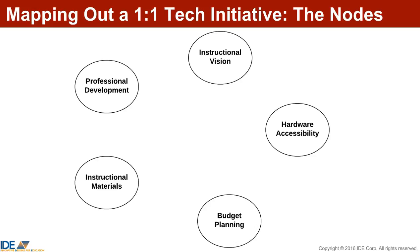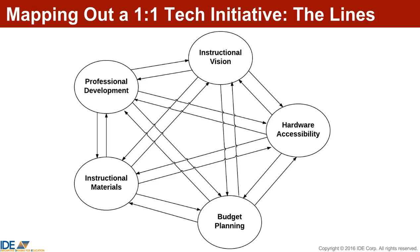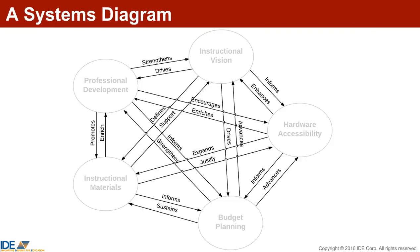It's easy to focus on the nodes. Organizations create action plans around putting the components in place. However, the health and success of any system rests with the lines, not the nodes. What counts is how well the nodes relate to one another — what the interrelationships are. That's what makes a system.